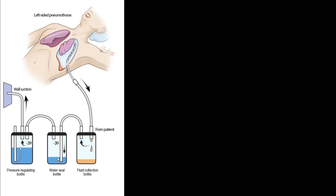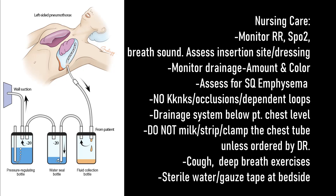Now let's see the nursing care of a patient with a chest tube. You have to monitor the respiratory rate, pulse oximetry, and breath sounds. Assess the insertion site and make sure the dressing is clean, dry, and intact. Monitor the drainage — amount and color — and if there is excessive drainage, inform the physician. Assess for subcutaneous emphysema, which is air trapped in the subcutaneous layer of the skin; you may hear or feel crackling or popping when you palpate the skin. Make sure the connections and tubing are free of kinks, occlusions, and dependent loops.